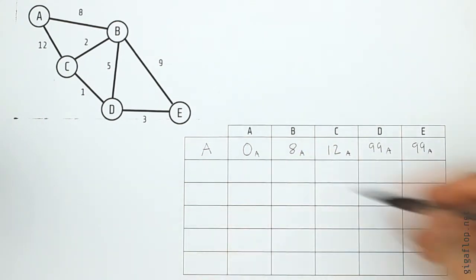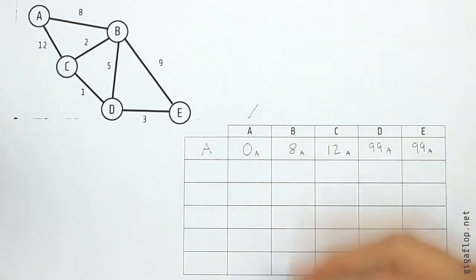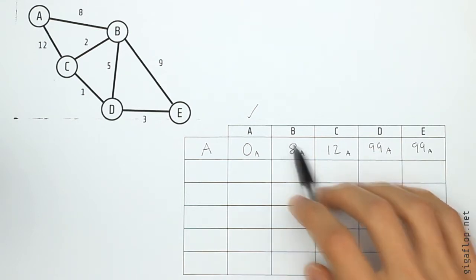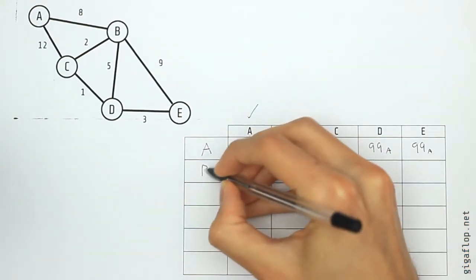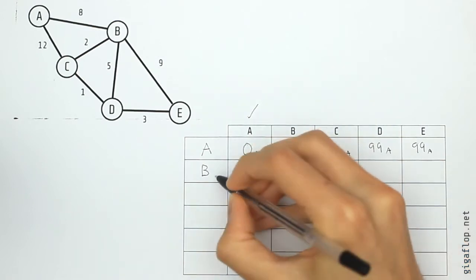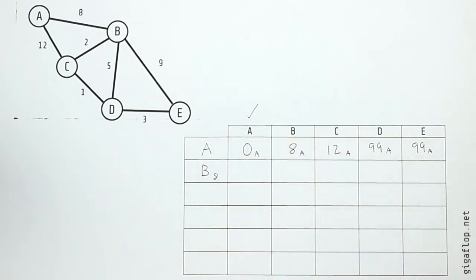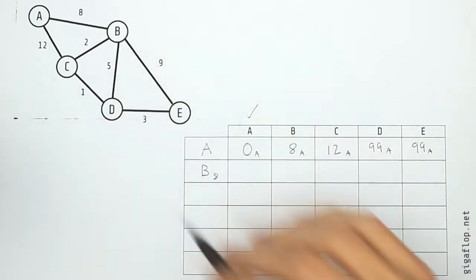So now we've inspected node A, so we can tick that off at the top of the table, just to say we've been there and we don't need to consider it any longer. Next we need to choose the node in the table with the lowest value, which hasn't yet been inspected. So we're going to choose either B, C, D or E, and the lowest value is B. So we're going to write down B as our next node, and we're going to write down that it has a length of eight already. So the shortest way to get to B from A is eight.